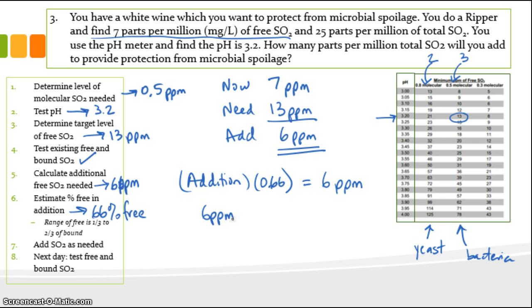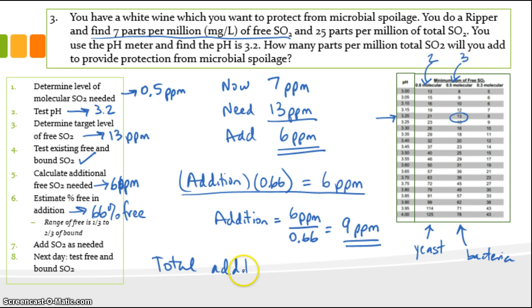So if we take 6 ppm, dividing both sides of this equation by 0.66, we end up with our addition equals 6 ppm divided by 0.66, and that equals 9 ppm. So our total addition is 9 ppm. And that'll give us protection from microbial spoilage. And again, the next day, we'd go back and we'd test it and make sure that we ended up at or near our target of 13 parts per million free.